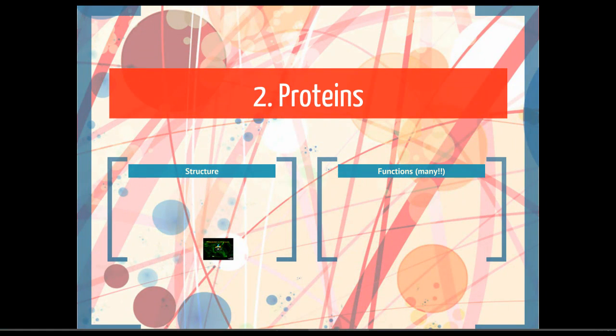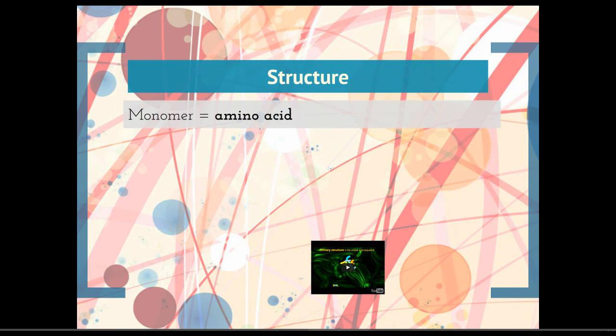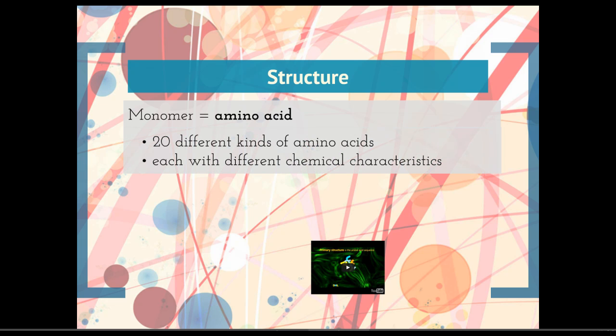The second kind of macromolecule we're going to mention are proteins. The protein monomer is an amino acid. There are 20 different kinds of amino acids, and each has different chemical characteristics.